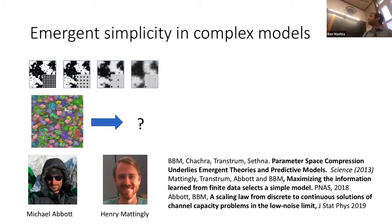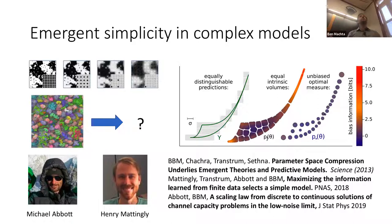More recently, led by Michael Abbott, we've been thinking about statistical tools for when you can't simplify the model — ways to use Bayesian priors to make predictions that are unbiased by the large number of parameters.